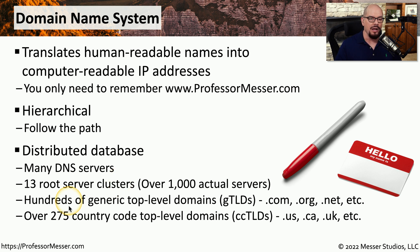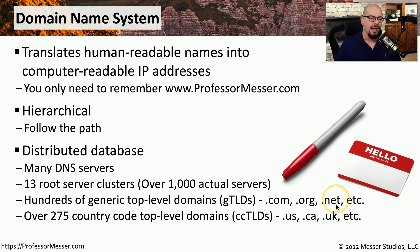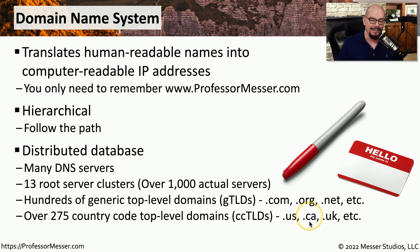There are hundreds of generic top-level domains. These are the domains that are the .com, the .org, the .net, and others. And then there are also country-level top-level domains, like .us, .ca for Canada, or .uk for the United Kingdom.